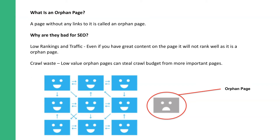Why are orphan pages bad for SEO? They usually result in low rankings and traffic, even if you have the best content. You could have a perfectly crafted article and it won't be indexed because it's an orphan page. Also, orphan pages can create crawl waste — low value orphan pages can steal crawl budget from higher priority pages.